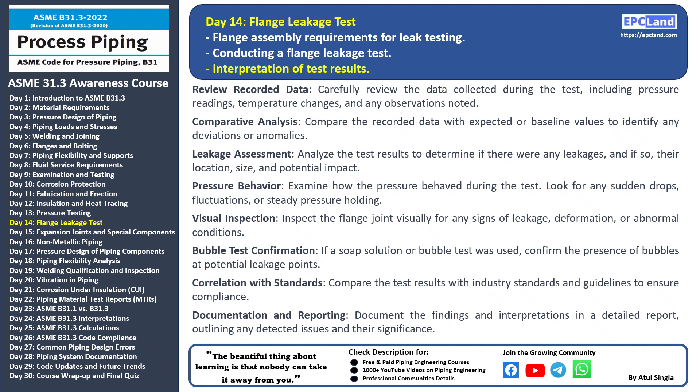Review recorded data: carefully review all data recorded during the test, including pressure readings, temperature changes, and any other relevant observations. Comparative analysis: compare the collected data with expected values or baseline measurements and identify any variations or anomalies that may indicate issues. Leakage assessment: analyze the results to determine if there were any leakages; if leaks are detected, assess their severity, location, and potential impact on the system. Pressure behavior: study patterns such as sudden pressure drops, fluctuations, or consistent pressure holding.